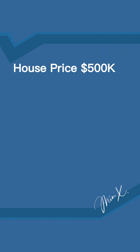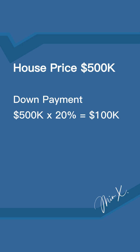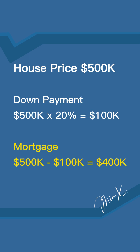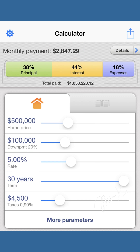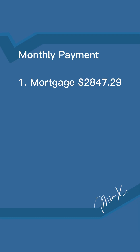Assuming you are prepared to make a down payment of 20%, which amounts to $100,000, you will be looking at securing a mortgage of $400,000. Considering an average interest rate of 5% over a 30-year term, your monthly mortgage payment would approximate $2,847.